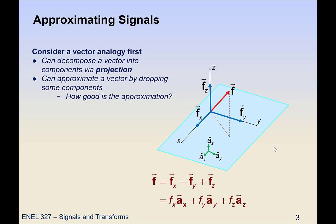And we can also approximate this vector by dropping some of the components. So for instance if we drop the z component we could say that f subscript xy is a reasonable approximation to f in some sense. But how good is that approximation? Can we actually quantify that?